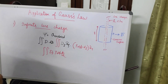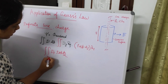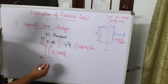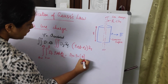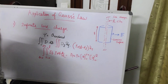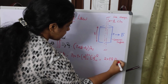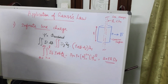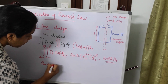Applying the limits — z varying from 0 to L and φ varying from 0 to 2π — and evaluating the surface integral, we get D_ρ · ρ · [φ] from 0 to 2π · [z] from 0 to L, which gives 2π ρ L D_ρ. This is the result of the surface integral of D·dS.